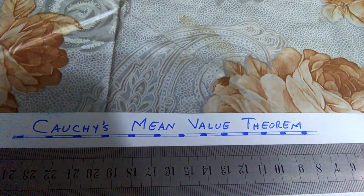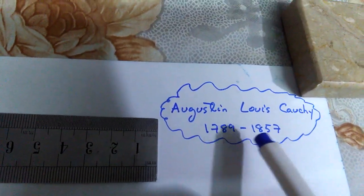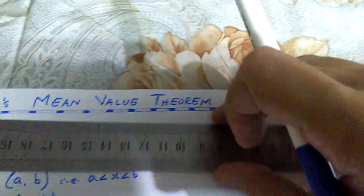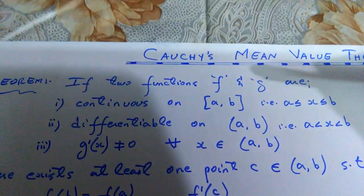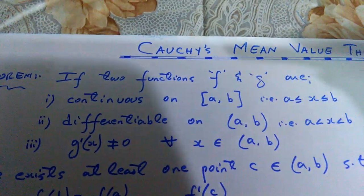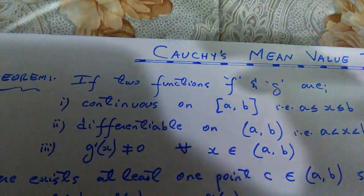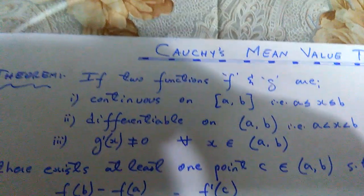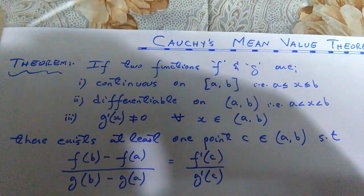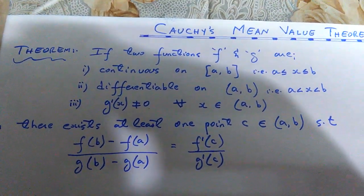It was presented by a French mathematician, Augustin Louis Cauchy, belonging to the period of the 18th to 19th century. His theorem contains two functions — it is based on two functions. The requirement of this theorem is two functions, and without two functions, the theorem cannot be properly explained.